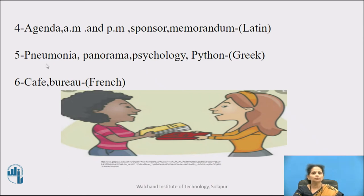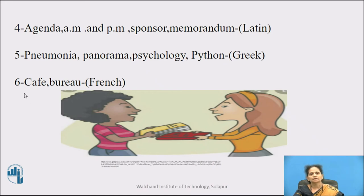Then pneumonia, panorama, psychology, and python — all these words are borrowed from Greek language. Café and bureau are borrowed from French language.